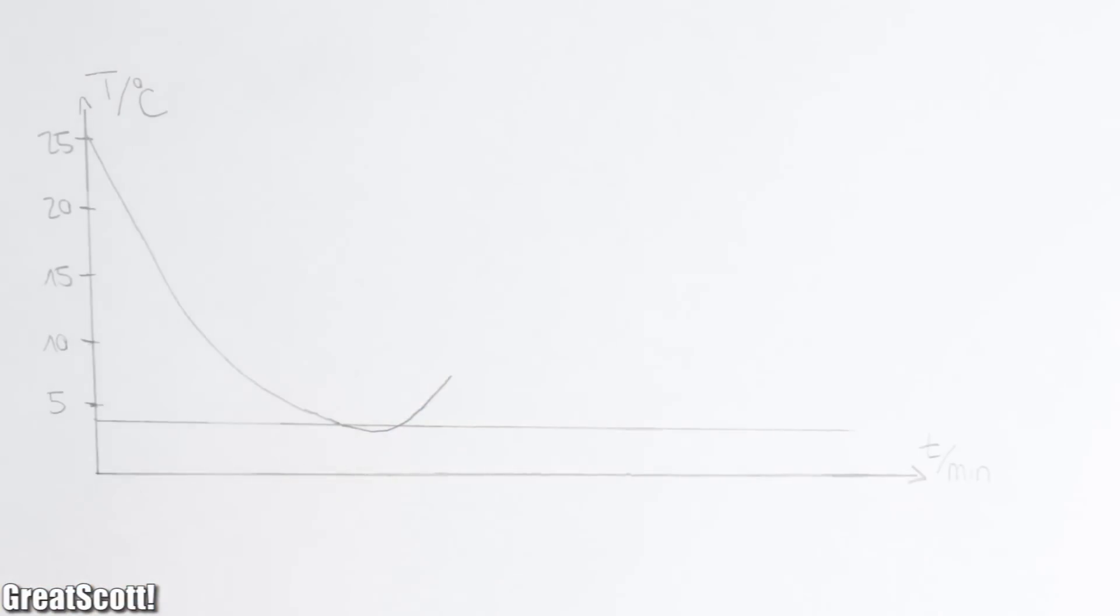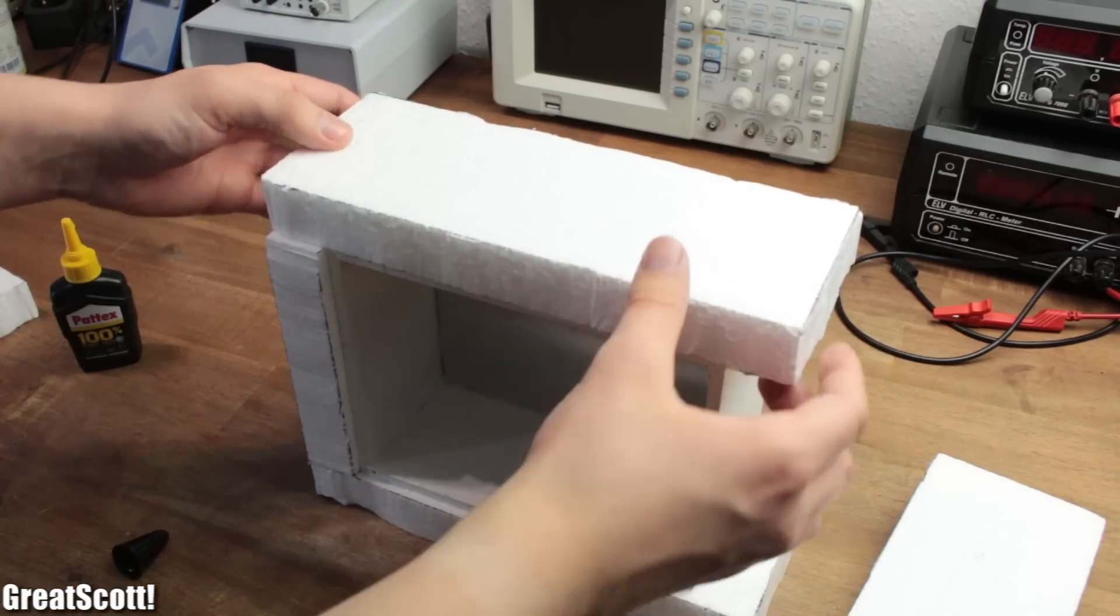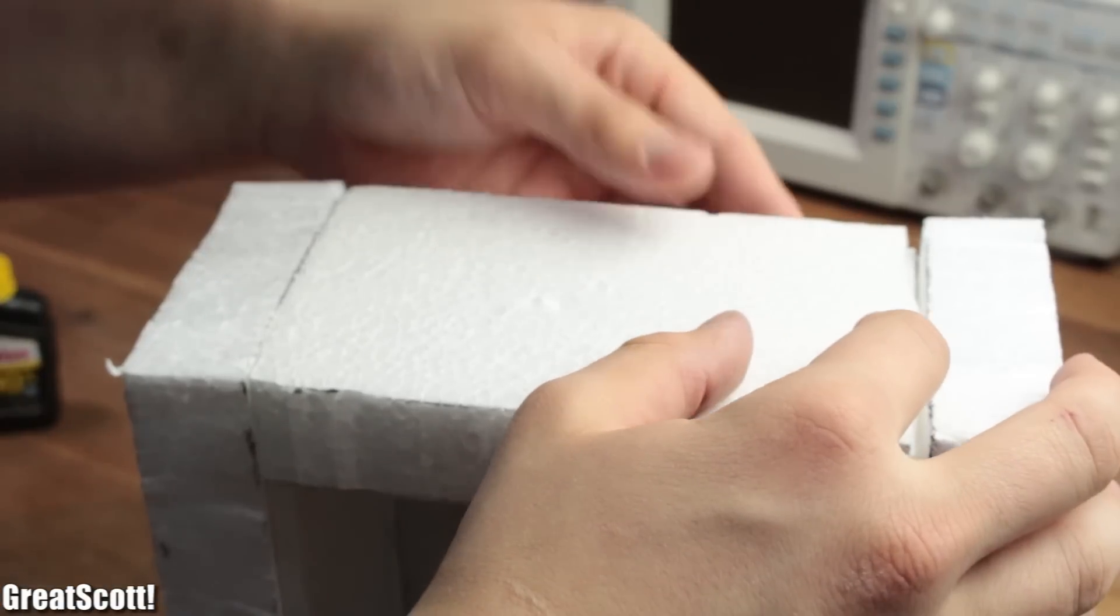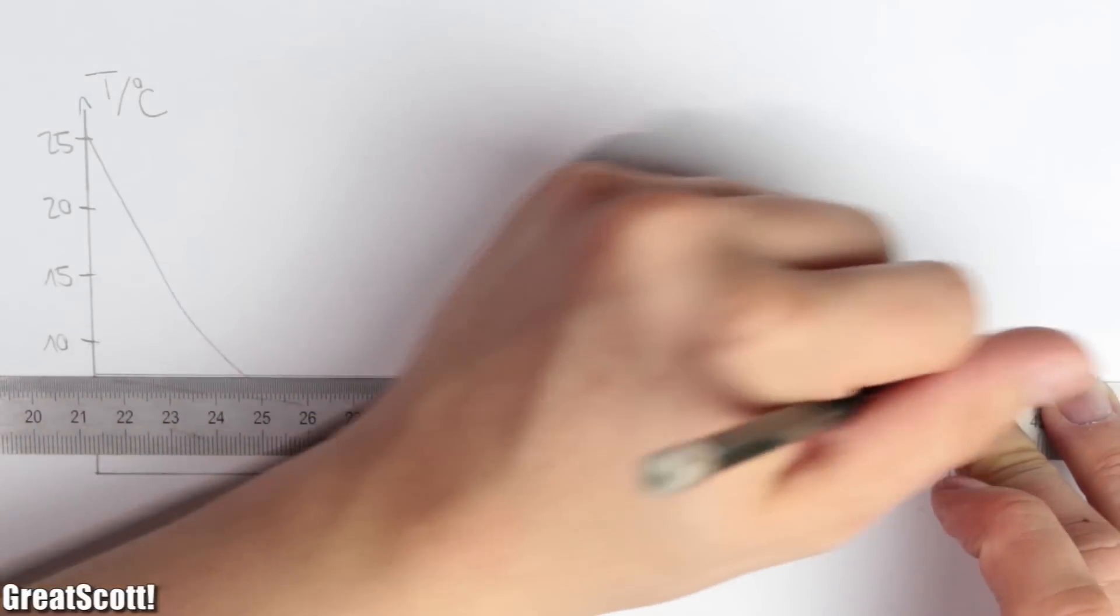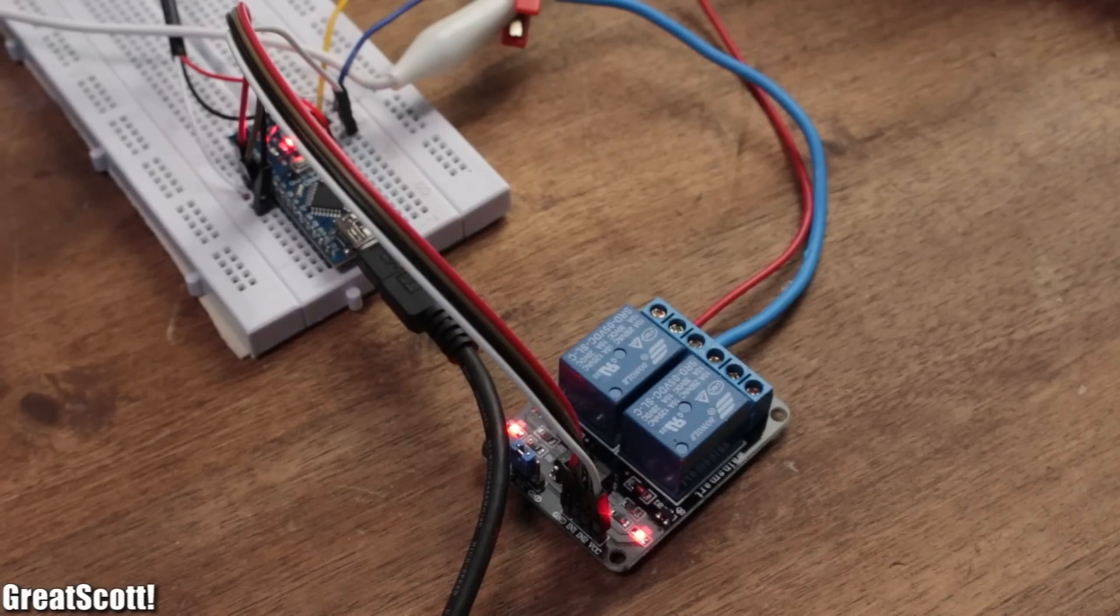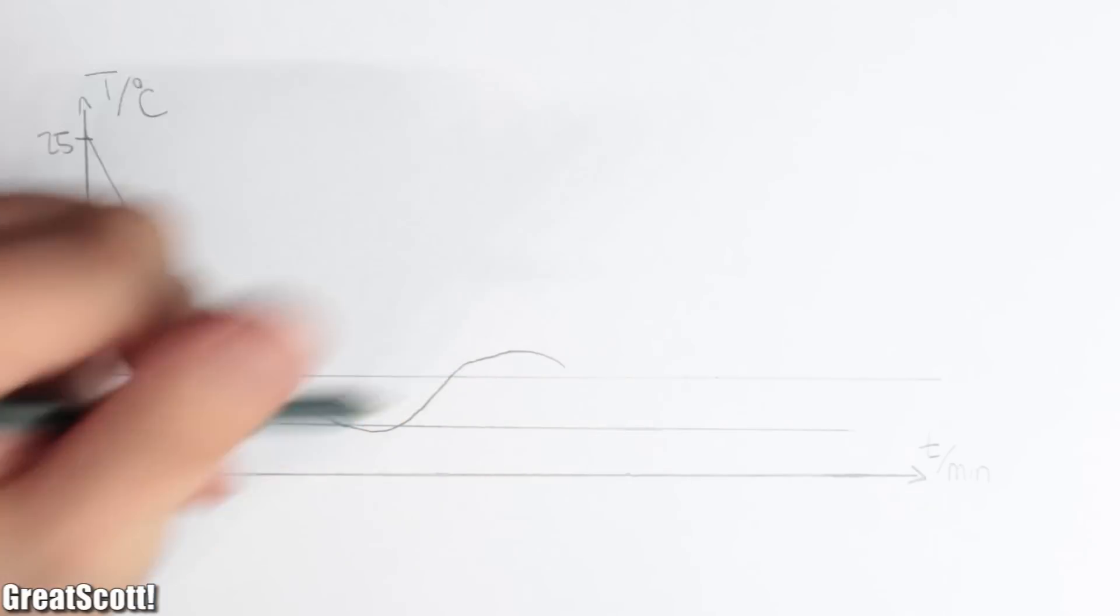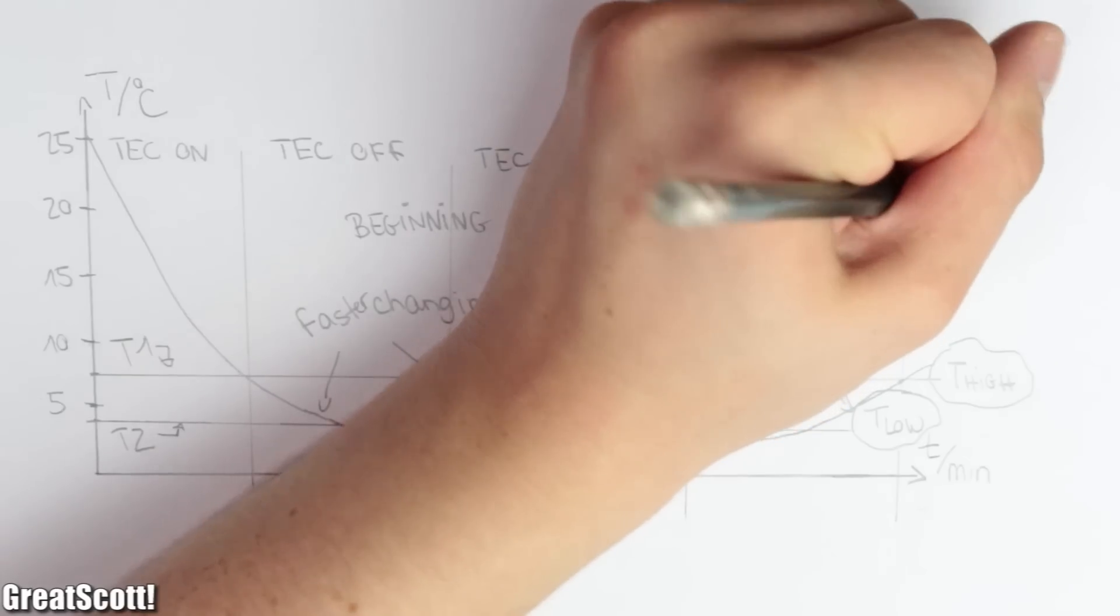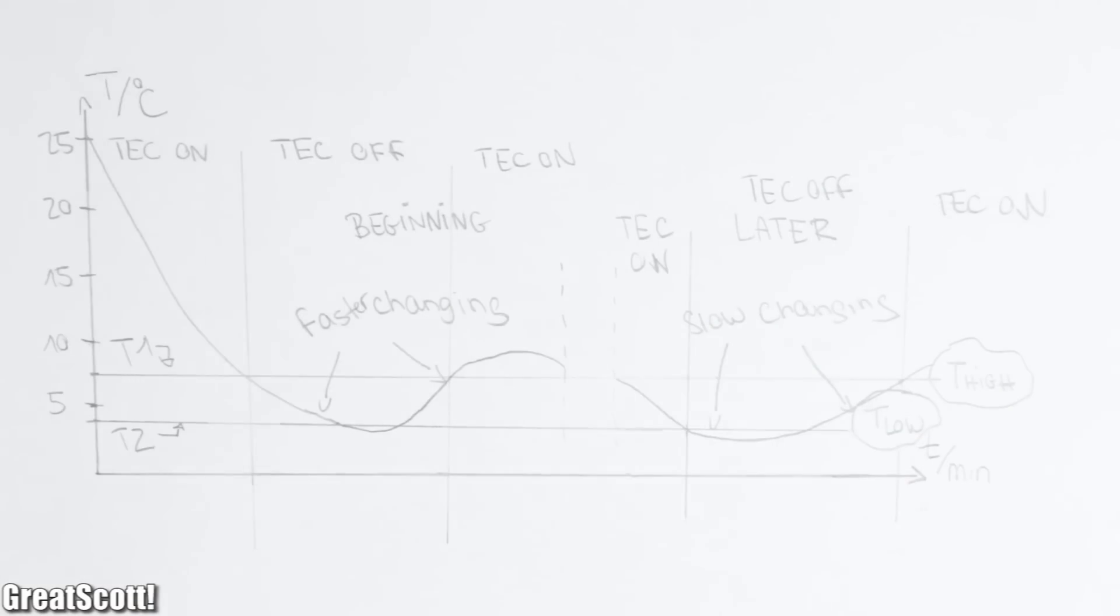the temperature increases only slowly due to a hopefully well done thermal insulation. After reaching another defined level, like for example 8 degrees, the modules turn back on again and cool down everything inside the box. This cycle then repeats and will save a bit of power.